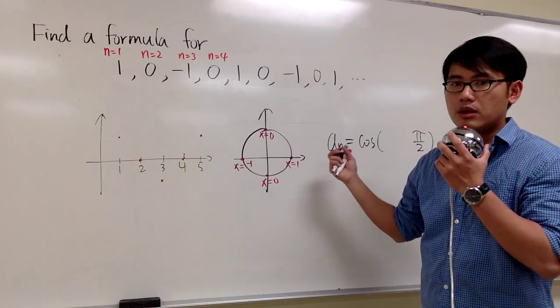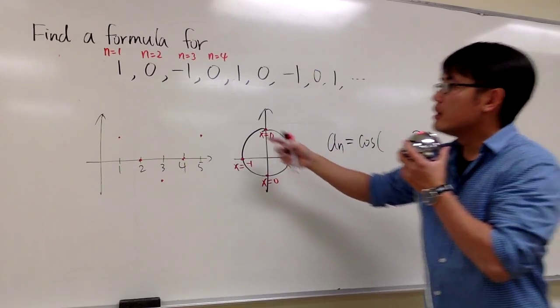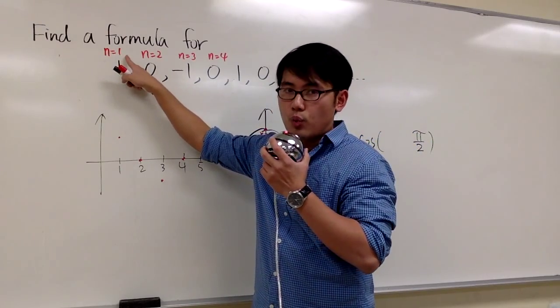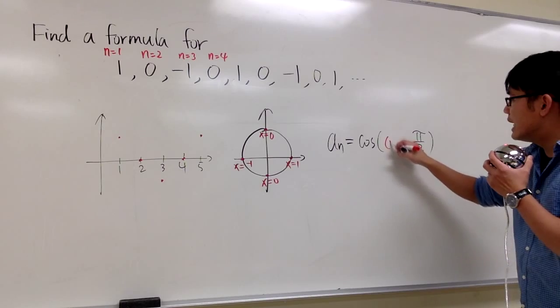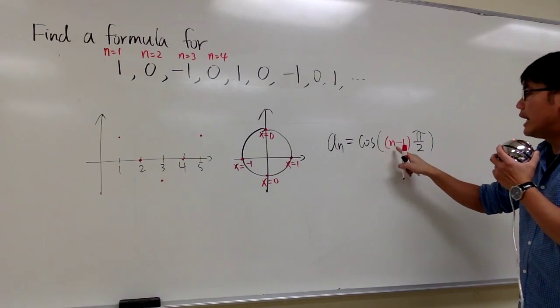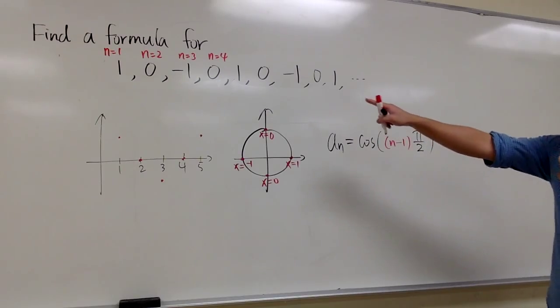Cosine of 1 angle will be 1. Cosine of 0 will be 1. But then, we start with n is equal to 1. So right here, what I need to plug in is, I need to use n minus 1. I have to use n minus 1, and then times pi over 2 to make this happen.